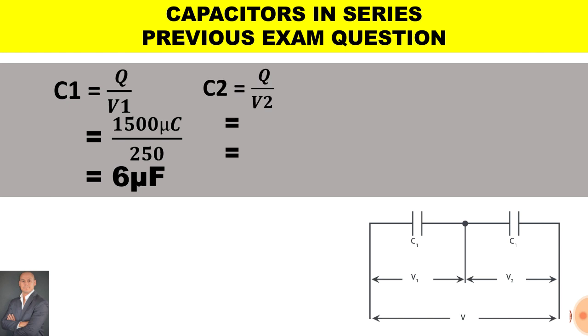To calculate C2 it'll be the charge over V2. The charge is 1500 microcoulombs divided by 500 volts. Therefore C2 is 3 microfarad.